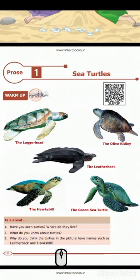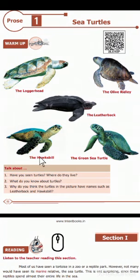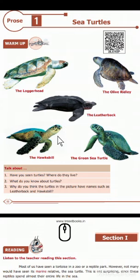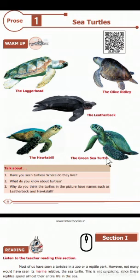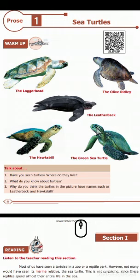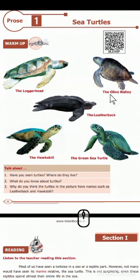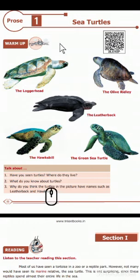Next, the Hawksbill. A hawk is actually a bird which has a sharp beak, similar to an eagle. This turtle has a beak which is bird-like — a sharp bird-like beak — and so it is named the Hawksbill. Next, the Green Sea Turtle. This turtle's skin is sea green in color, and so it is named the Green Sea Turtle. I hope you all now understand what turtles are and why these turtles have their respective names.